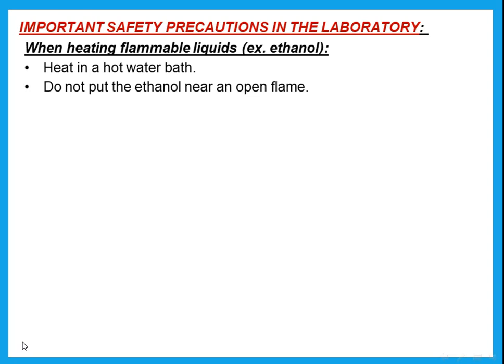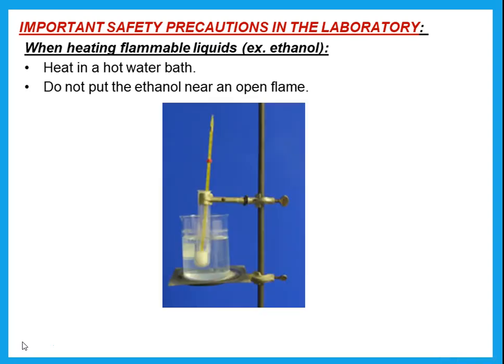Now let's talk about important safety precautions in the laboratory. If a question says 'suggest a safety precaution,' go back and see what was being used. If something flammable is used — for example ethanol — you cannot put it directly on an open flame because it will catch fire. So heat it in a hot water bath: put a beaker of water on the Bunsen burner and place the test tube containing ethanol inside the water. It is important that you do not put ethanol near an open flame or it will catch fire.